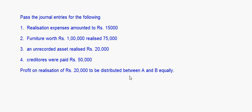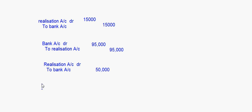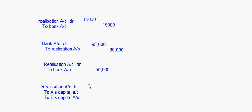Finally, profit on realization of rupees 20,000 is to be distributed between A and B equally. If there is a profit on realization, the entry is: Realization Account debit to A's Capital Account and to B's Capital Account. Since the profit is rupees 20,000 distributed equally, it is rupees 10,000 each — being profit on realization distributed.